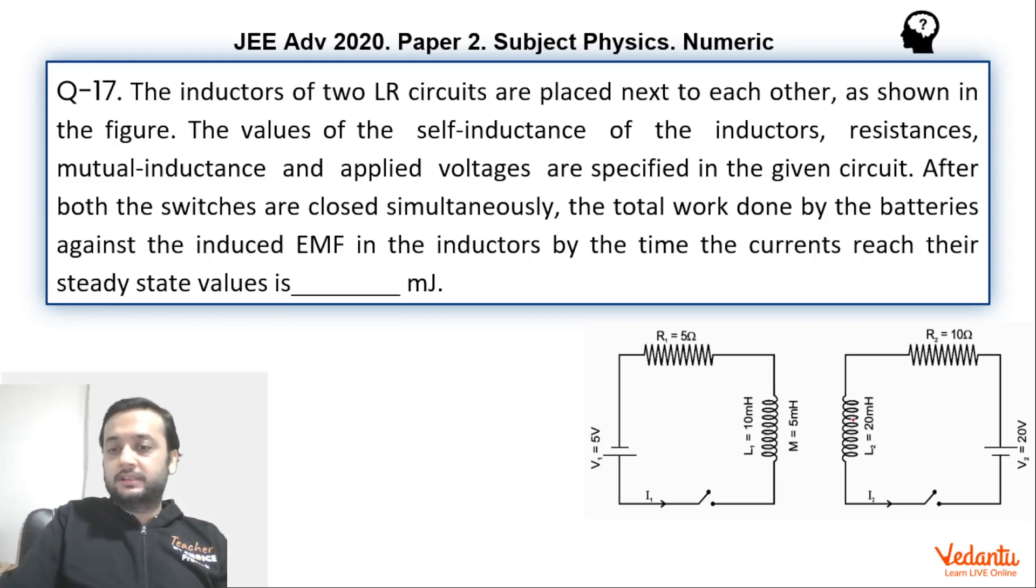There are two circuits. The flux of both coils are linked, hence the mutual inductance has been given which is 5 mH. When we close both circuits, we have to find the work done by both cells against the EMF of the inductors. Basically, we have to find the energy stored in the inductor. That essentially will be work done by the cells against the EMF of the inductors.